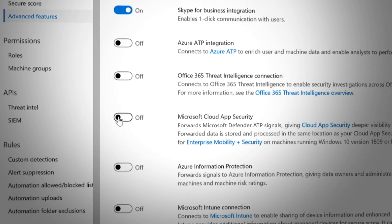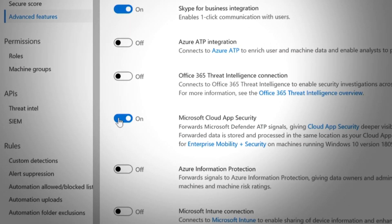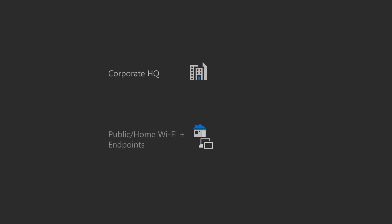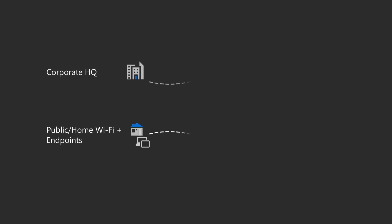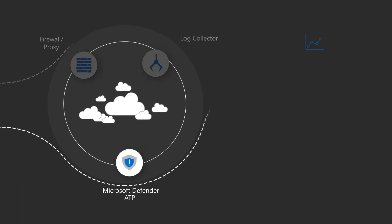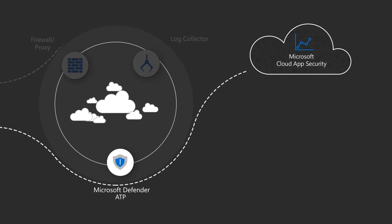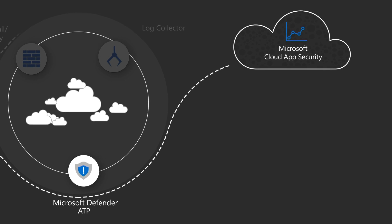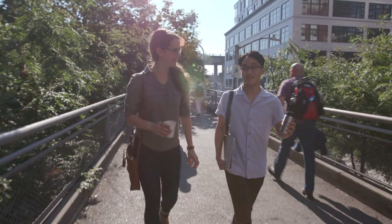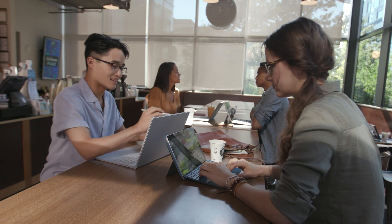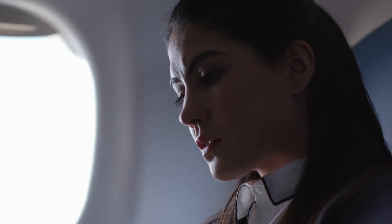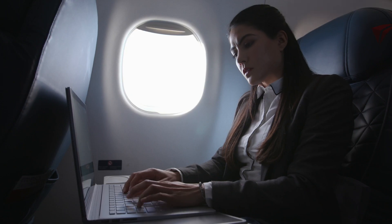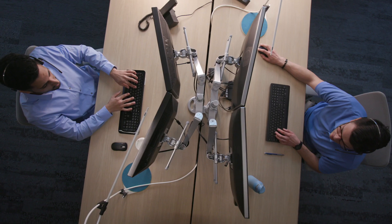Once you enable this integration, cyber data from all of the endpoints managed by Microsoft Defender ATP is sent directly to Microsoft Cloud App Security. Wherever the device goes — off to a coffee shop or on a plane — that monitoring is still in place even outside of the corporate firewall or proxy.